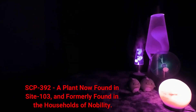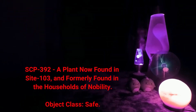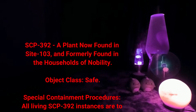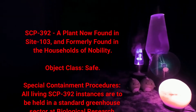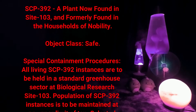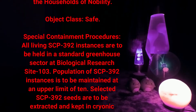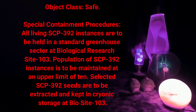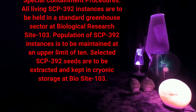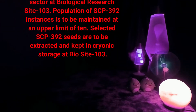SCP-392: A plant now found in Site-103 and formerly found in the households of nobility. Object class: Safe. Special containment procedures: All living SCP-392 instances are to be held in a standard greenhouse sector at Biological Research Site-103. Population of SCP-392 instances is to be maintained at an upper limit of 10. Selected SCP-392 seeds are to be extracted and kept in cryonic storage at Bio-Site-103.